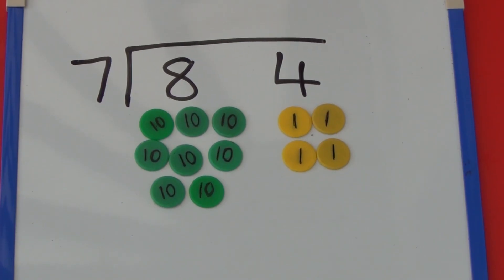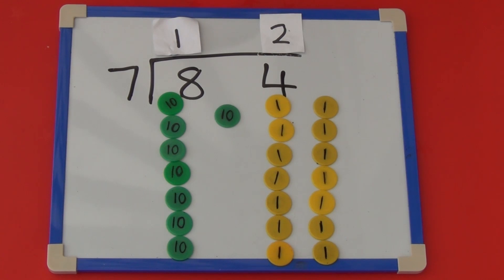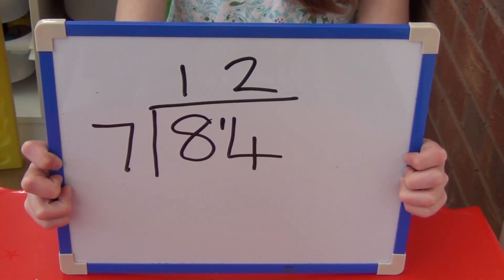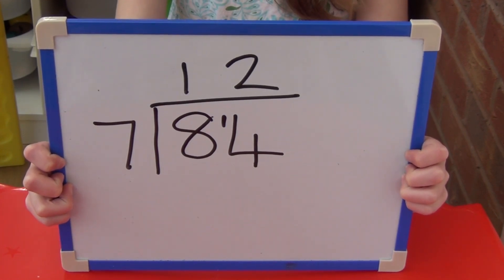For 84 we need 8 tens and 4 ones. As we are dividing by 7, we need to put the tens into groups of 7 and then the ones. The 8 tens divide into 1 group of 7 tens, but we have 1 ten left over. So we need to exchange the 10 for 10 ones and put them with the 4 ones. The 14 ones we have now divide into 2 groups of 7. So we have 1 group of 7 tens and 2 groups of 7 ones, which is 12. We can show this as bus stop method without the counters: 84 divided by 7 equals 12.